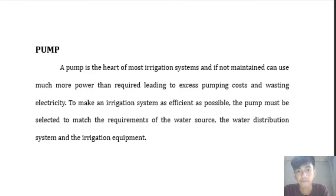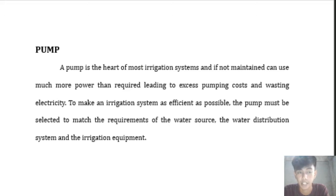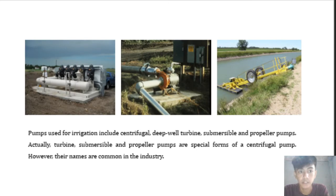A pump is the heart of most irrigation systems, and if not maintained, can cause much more power consumption than required, leading to excess pumping cost and wasting electricity. To make an irrigation system as efficient as possible, the pump must be selected to match the requirements of the water source, the water distribution system, and the irrigation equipment.